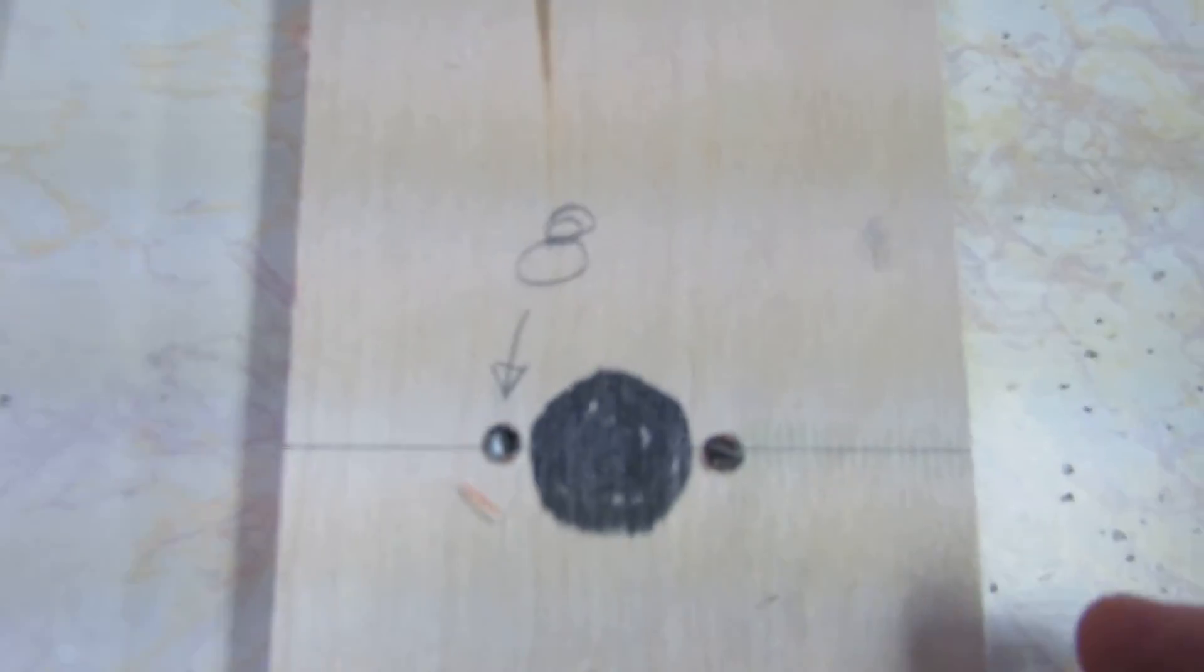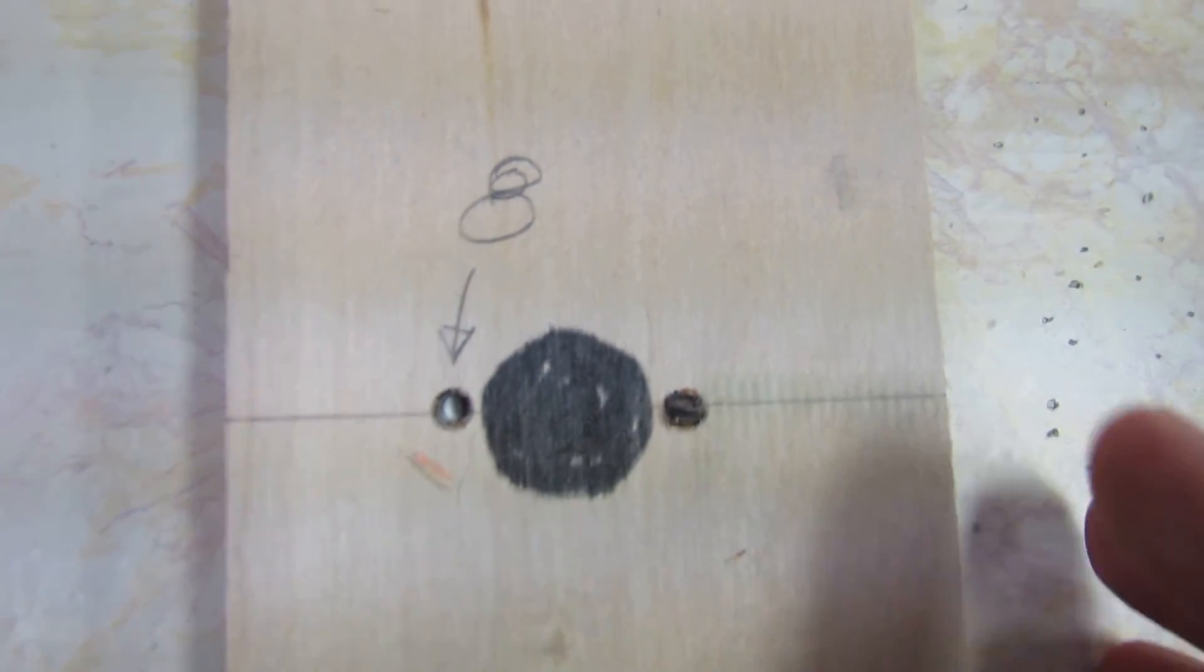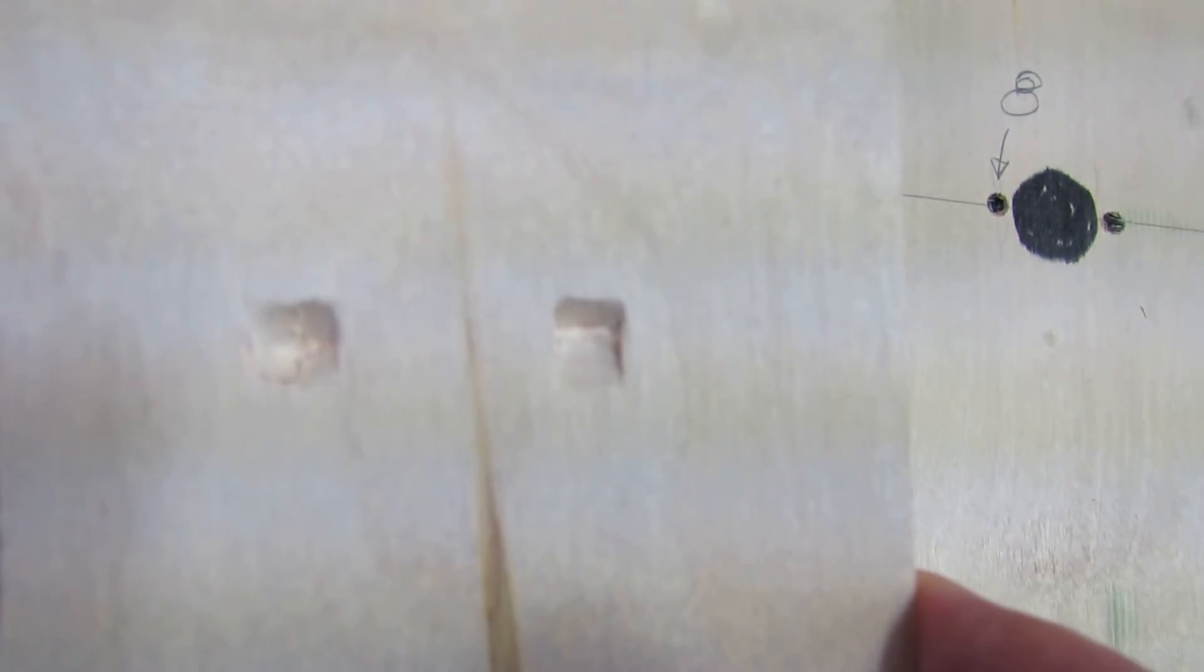And at eight pumps still right on line. It's punching through the first board. It makes a pretty good dent in the second board. And you can see it's almost starting to punch through the second board.